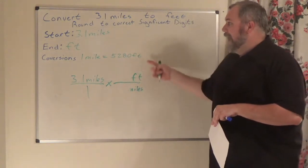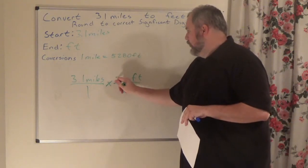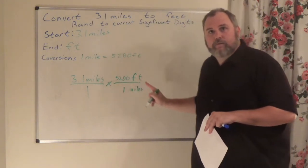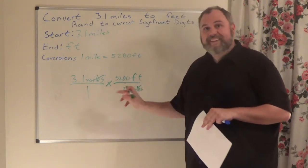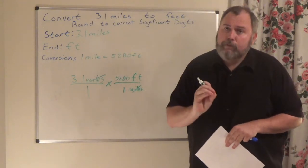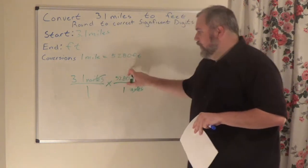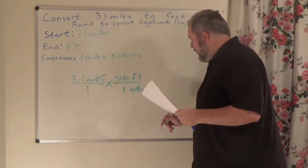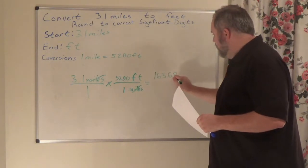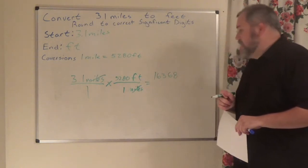So what numbers go where? It says one mile, so I put one mile on the bottom. It says 5,280 feet, so that goes on top. Now miles cancel out and what's left is just feet. I multiply across the top — do not get confused with proportion where you cross-multiplied; this you just multiply. So 3.1 times 5,280 gives you 16,368. One times one is just one, so we're left with 16,368.